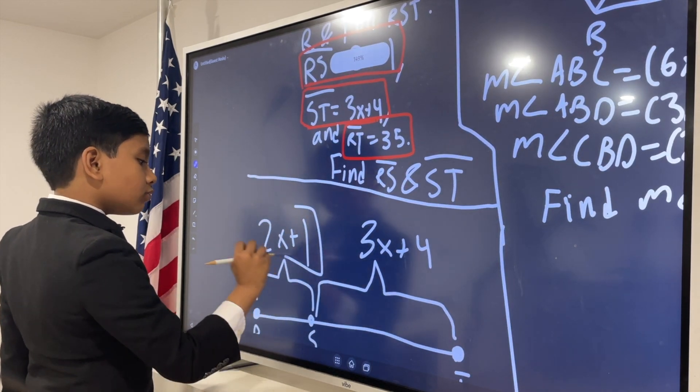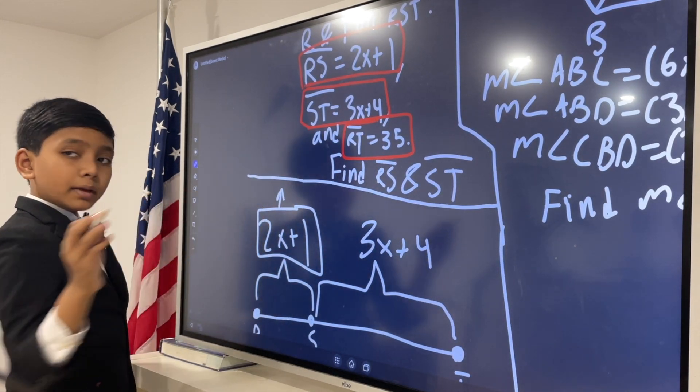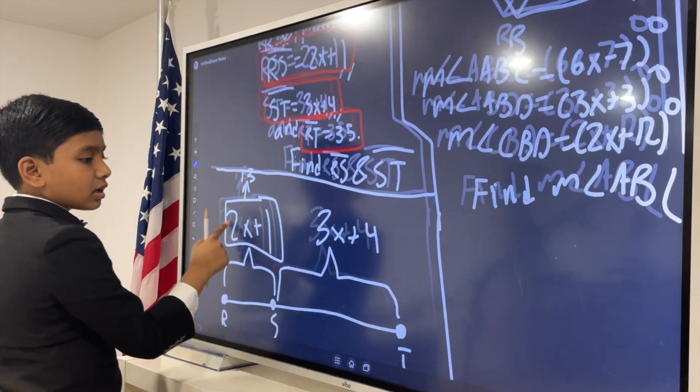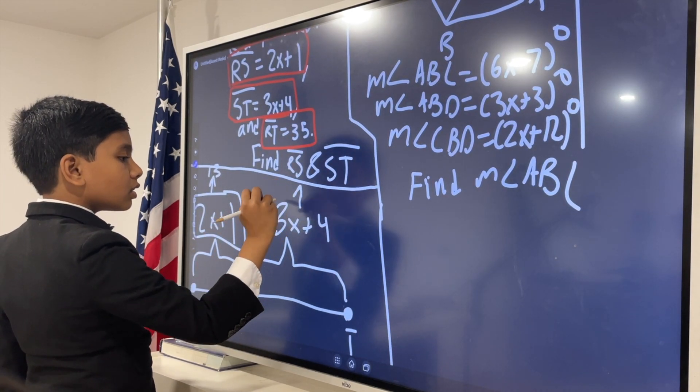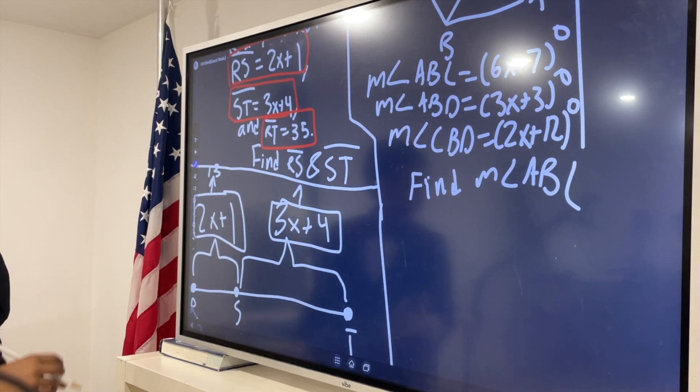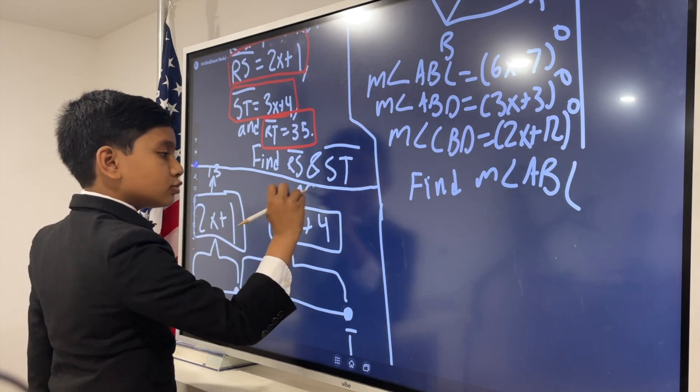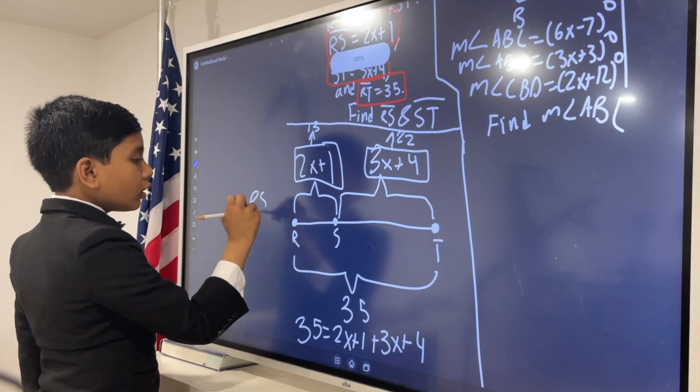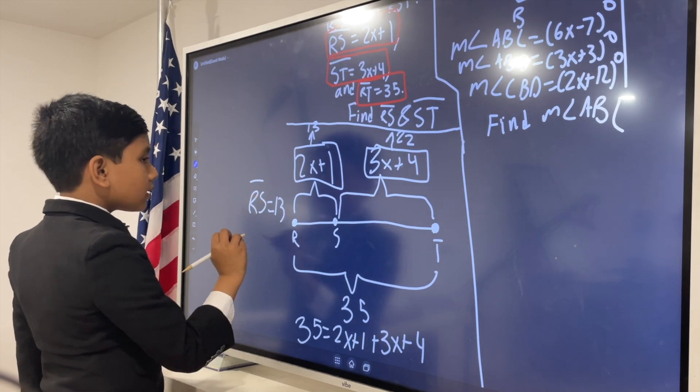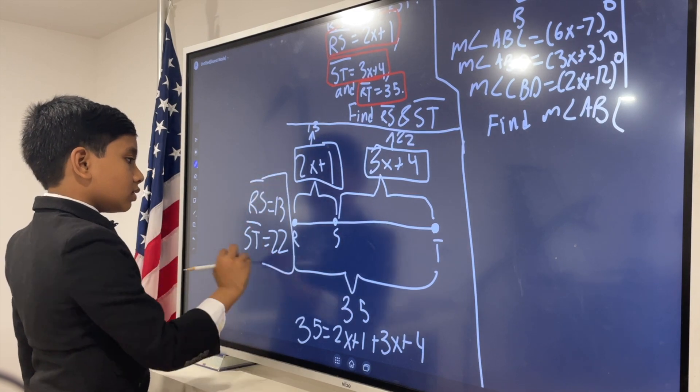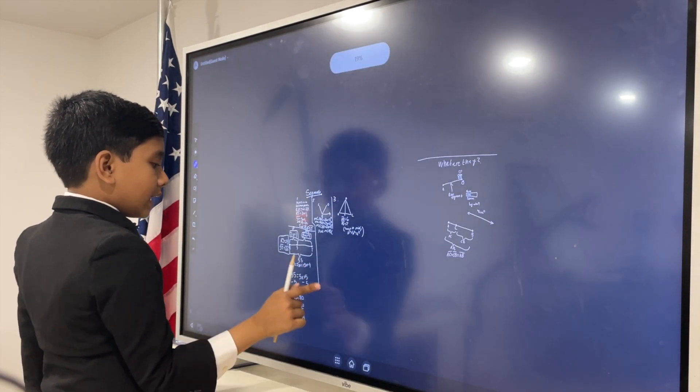So, 2x plus 1 will become 2 times 6 plus 1, which is 12 plus 1, which is 13. 3x plus 4 will become 3 times 6 plus 4, which is 18 plus 4, which is 22. So, that means that RS is 13 and ST is 22. Bam! That's our answer.